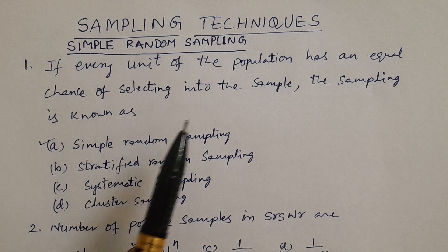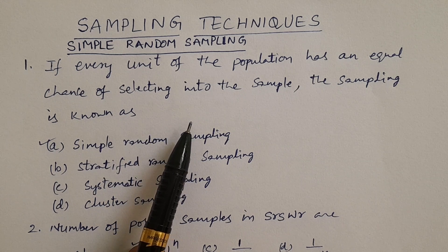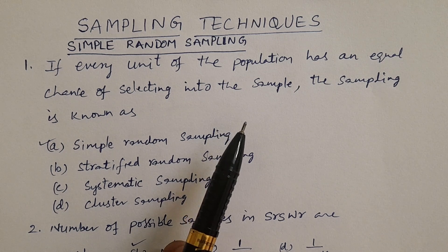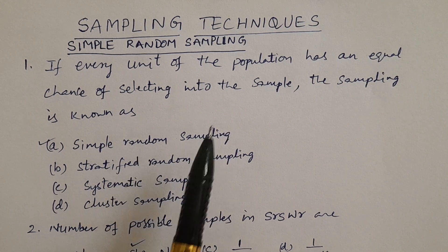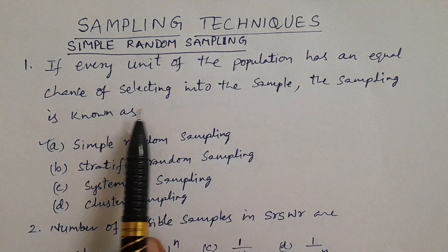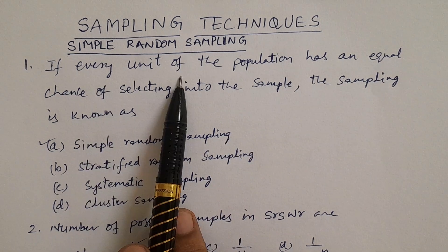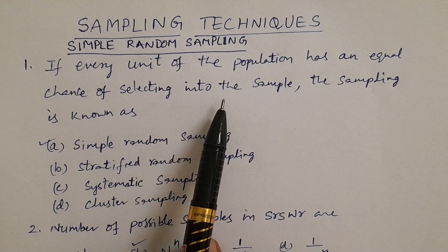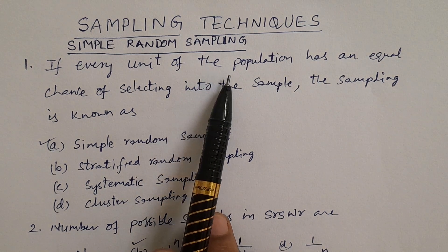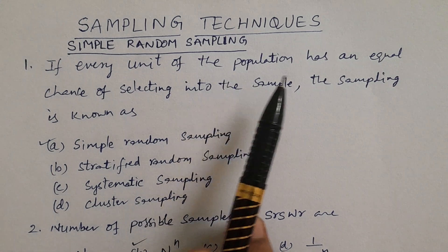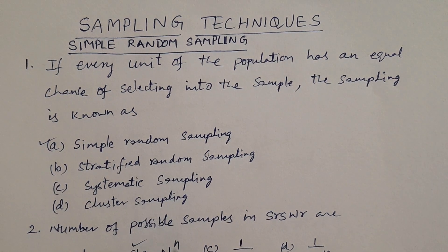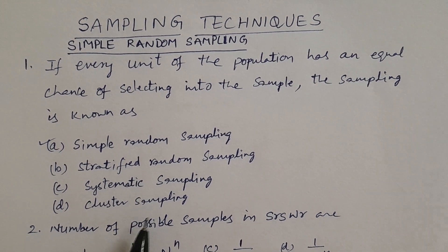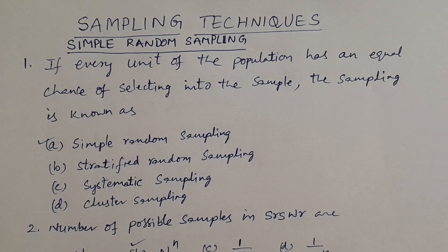Whenever every unit of the population has an equal chance of selecting into the sample, such sampling is known as Simple Random Sampling. Options are simple random sampling, stratified sampling, systematic sampling, cluster sampling. The answer is simple random sampling.